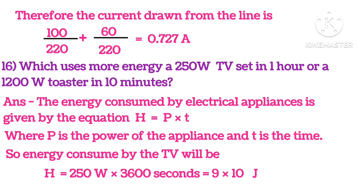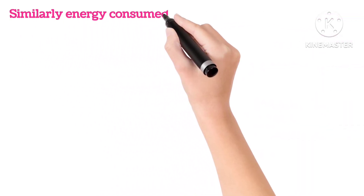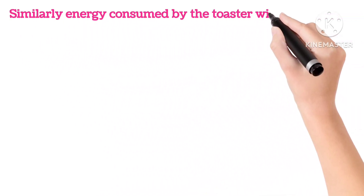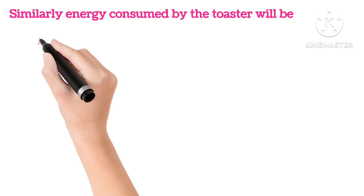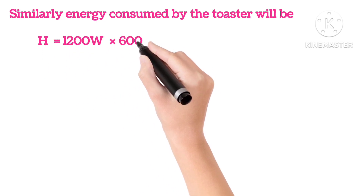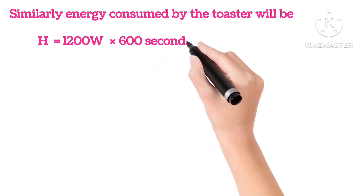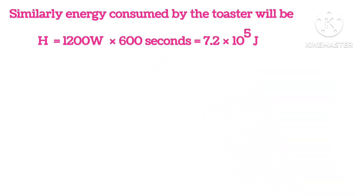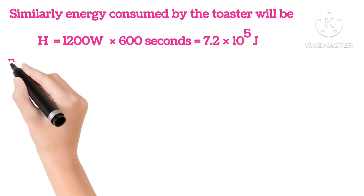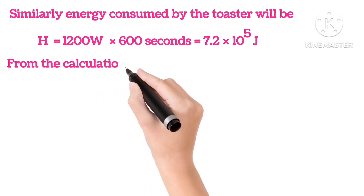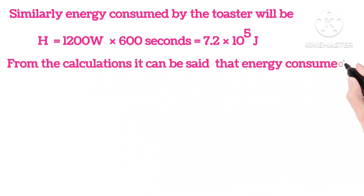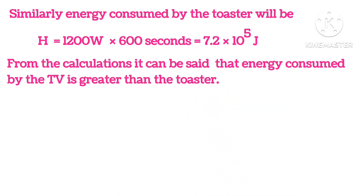Similarly, energy consumed by the toaster, putting in the values for 10 minutes, 600 seconds, so 7.2 into 10 to the power of 5 joules. So from the calculation, it can be said that the energy consumed by TV is greater than that of the toaster.